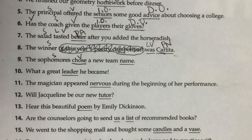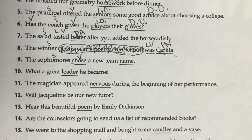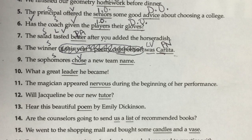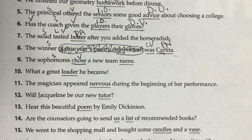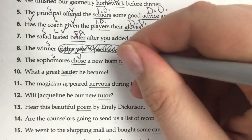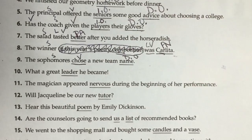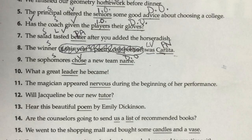Number nine: 'The sophomores chose a new name.' Here is our subject and here is our verb. Chose is an action verb, so we're going to have a direct object. Ask who or what after the verb: the sophomores chose who or what? They chose a name, so name is our direct object.